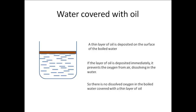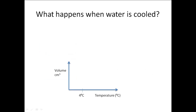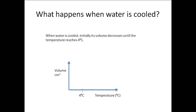What happens when water is cooled? You see a graph shown here — the y-axis represents volume and the x-axis represents temperature. There is a mark at four degrees Celsius. When water is cooled, initially its volume decreases until the temperature reaches four degrees Celsius. At four degrees Celsius, the volume of water starts to increase and water expands.